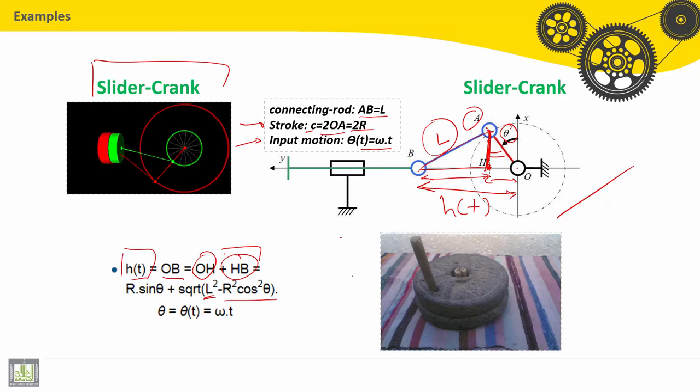AH, this distance, if we consider the triangle AHO, it is R cosine theta. So AH squared is R squared cosine theta squared.